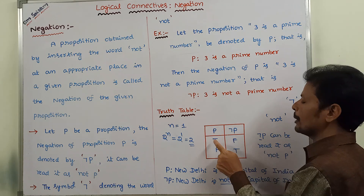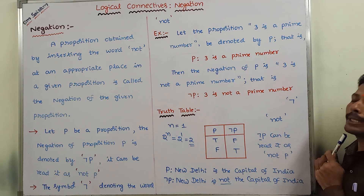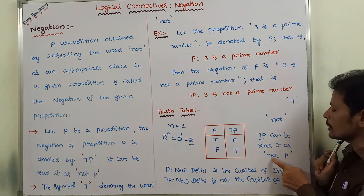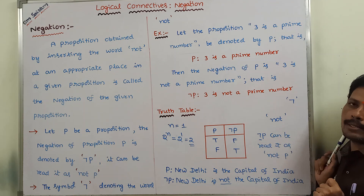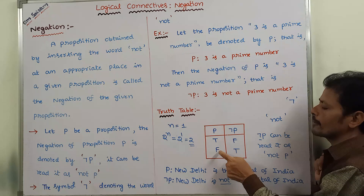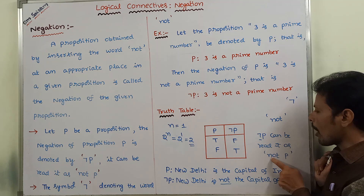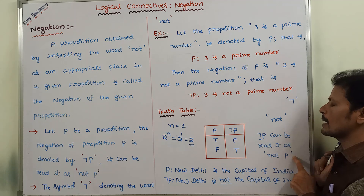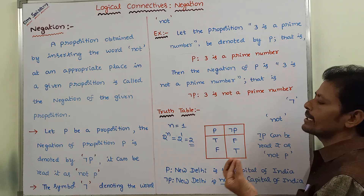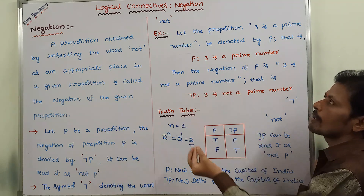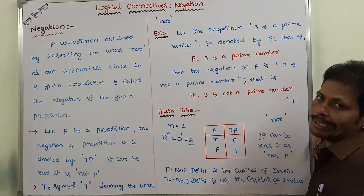If P is true, then ¬P is 'not true,' which is false. If P is false, then ¬P is 'not false,' which is true. These are the summary points of the negation connective in logical connectives.